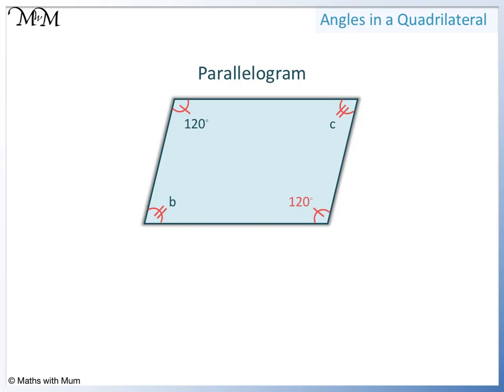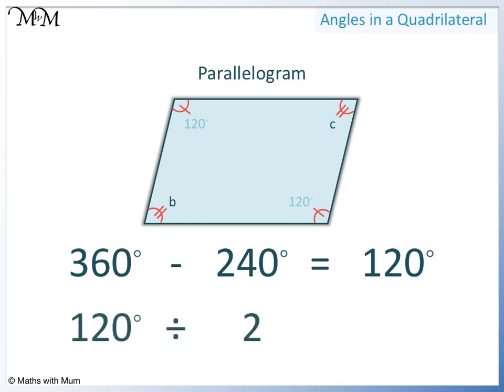Next, we can find B and C by adding the angles that we do know and subtracting them from 360 degrees. 120 plus 120 equals 240. 360 minus 240 equals 120. B and C both add up to 120 degrees. To find out what they are each worth, we can divide 120 degrees by 2. 120 divided by 2 equals 60. So B and C are 60 degrees.